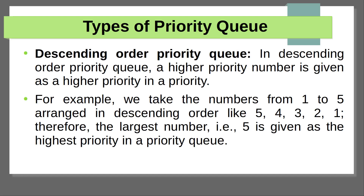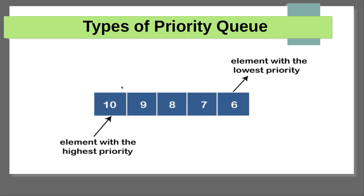Descending order priority queue means the queue is arranged in the backward form: 5, 4, 3, 2, 1. The 5 is the highest number and it will be given the highest priority — it will enter the queue, be processed, and removed first. The least element 1 will be processed and removed last. This type of priority queue is called the descending order priority queue.